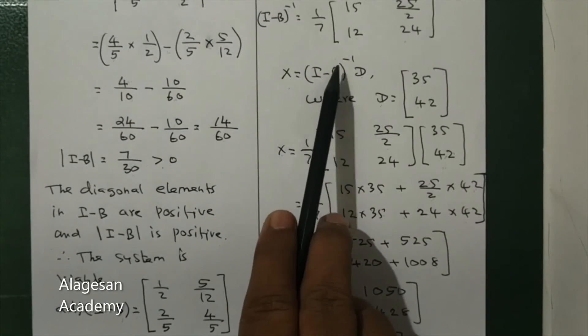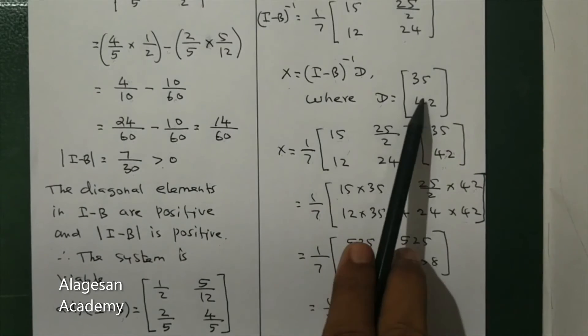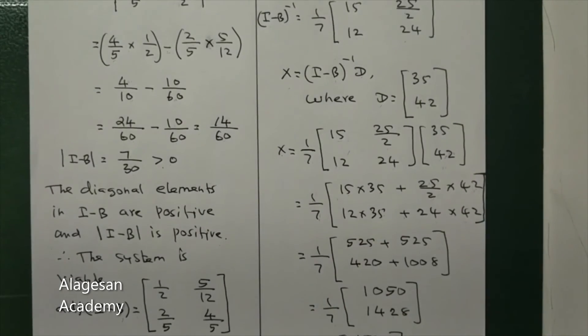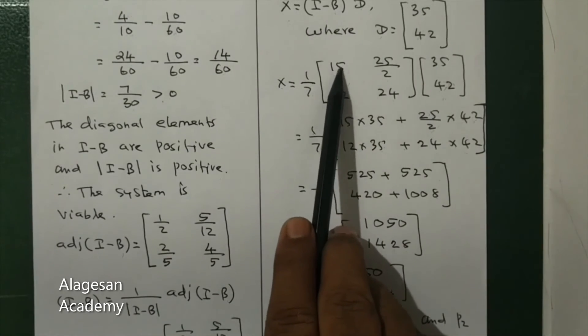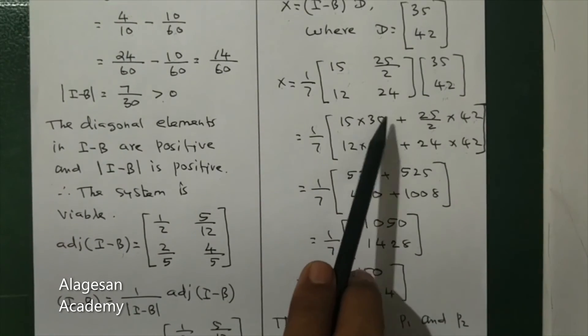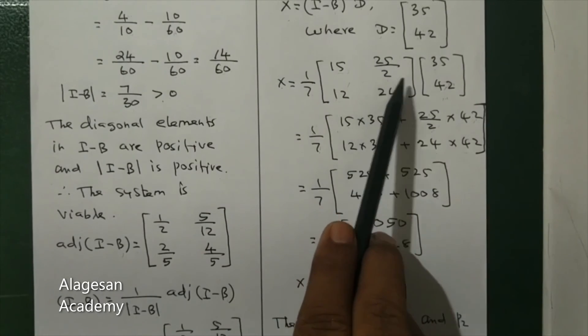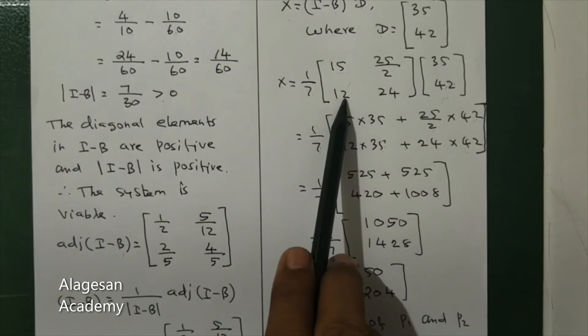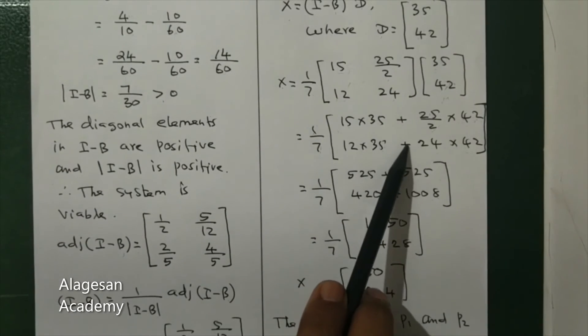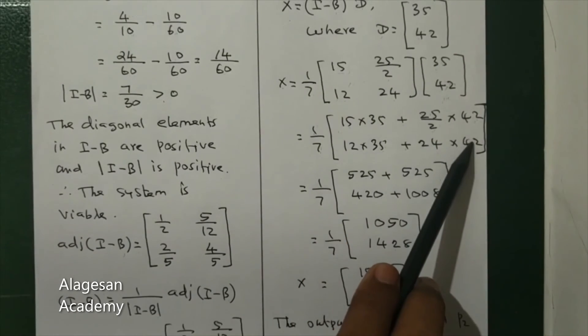I minus B whole inverse times the D matrix: 1/7 times first row, 15 times 35 plus 25/2 times 42. Second row, this column: 12 times 35 plus 24 times 42.